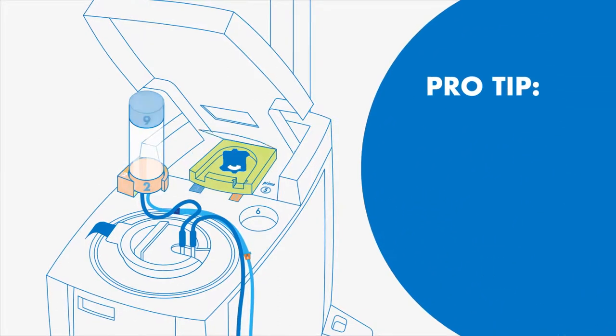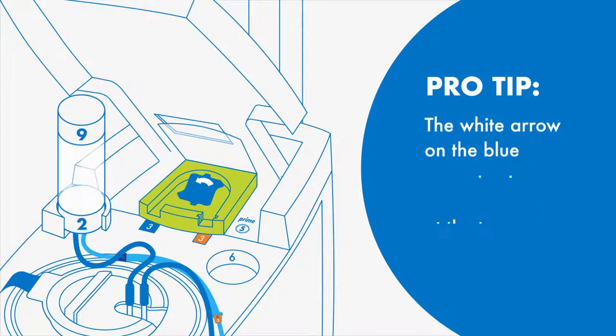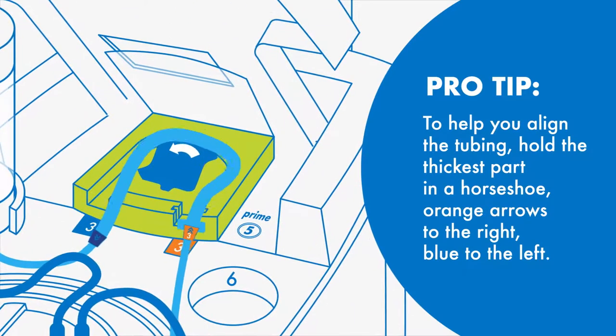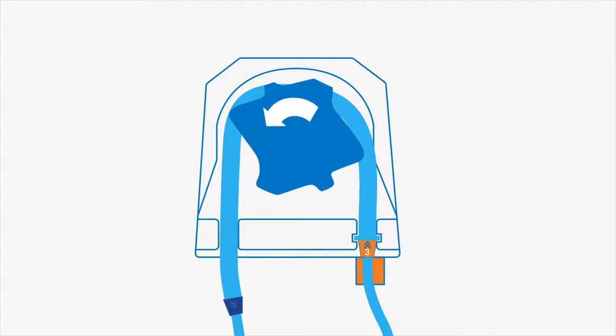Now open the roller pump lid. Fully insert the tubing disc into the orange slot, number 3, pressing it down. Orange 3 to orange 3.